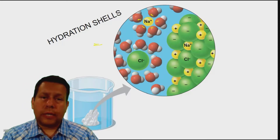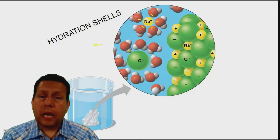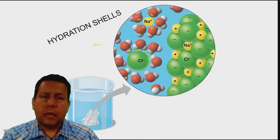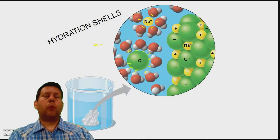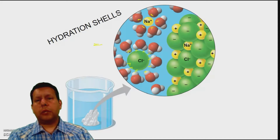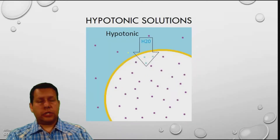Now look over at the chlorine — you can see that the water has rotated. Chlorine is a negative ion, and the hydrogens have a positive charge, so you can see how they arrange and form, again, a hydration shell. That's going to be really important when we talk about water potential and why it's water that's moving and not the solute.